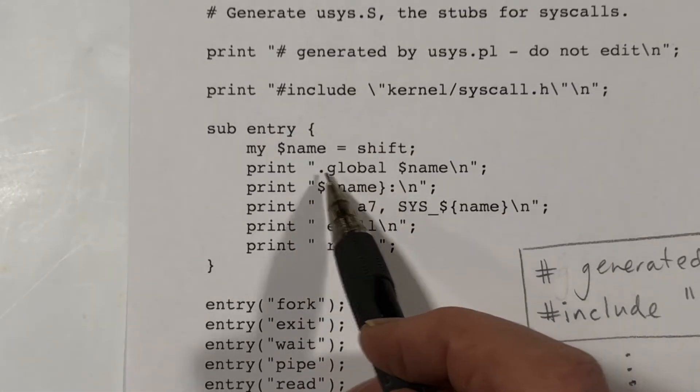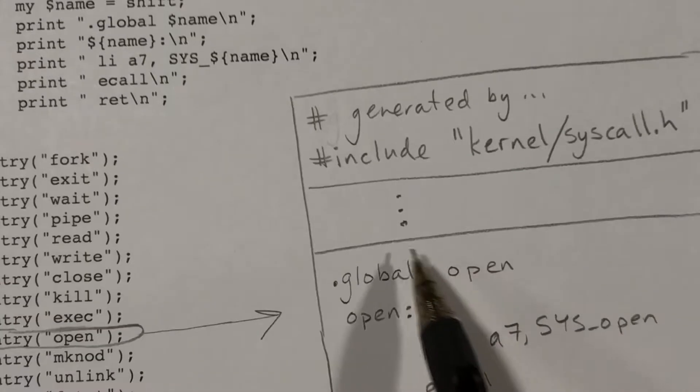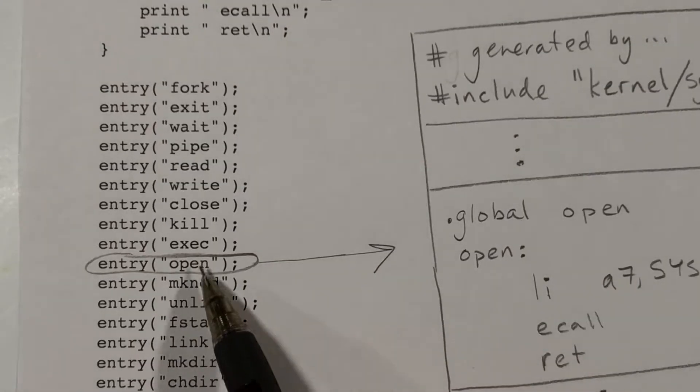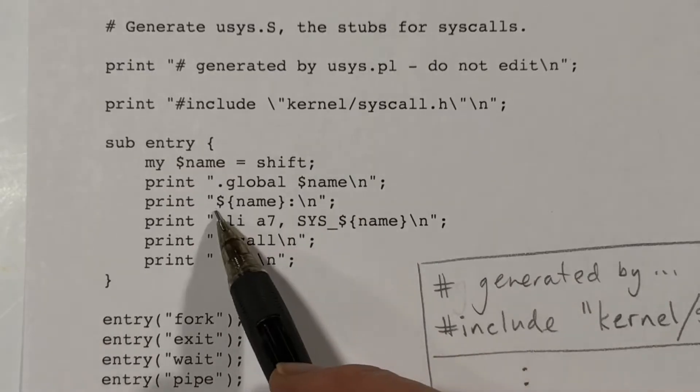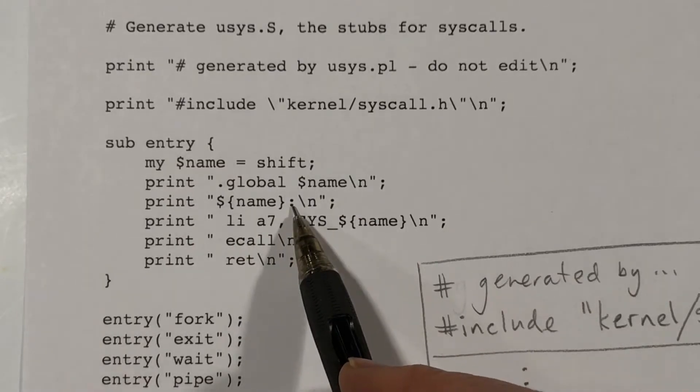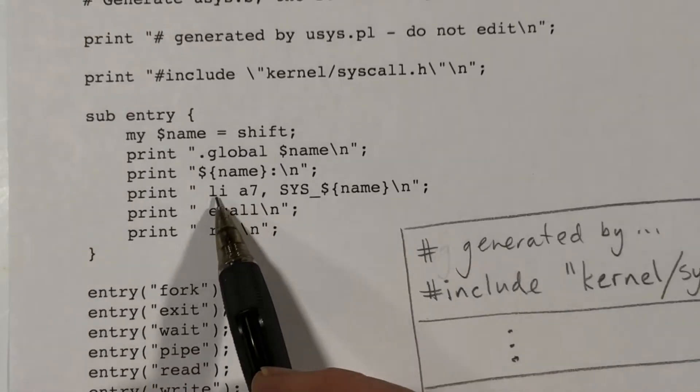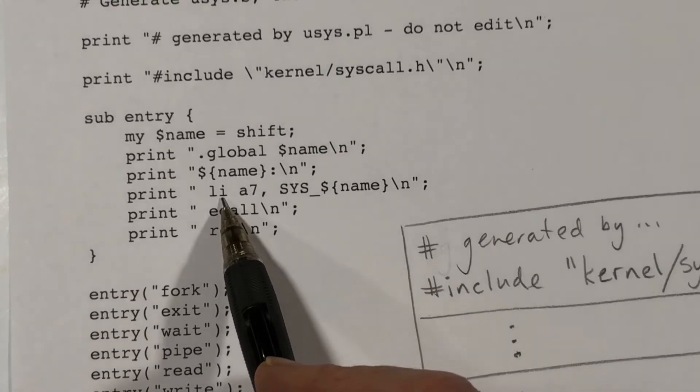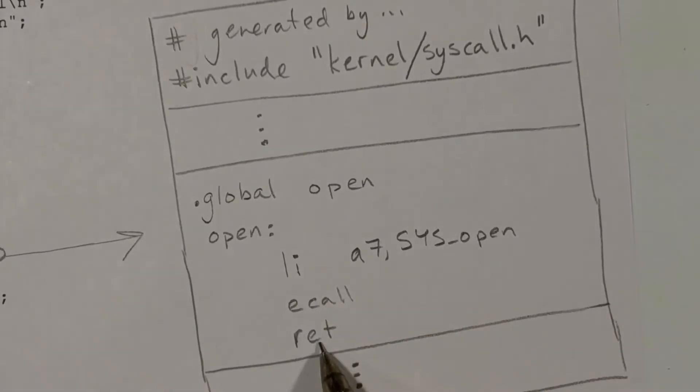Well, for each one of them, we create a .global statement. Here's the .global with the particular name. In this example, it's open, so the name that we're dealing with is open. Then we have a label, open colon, which is right here. And then we have three instructions. li is load immediate, ecall is environment call, and ret is return. So we see those, li, ecall, and ret.